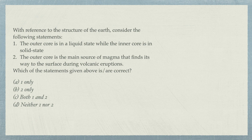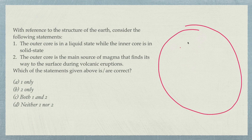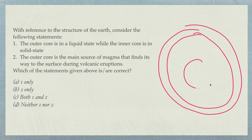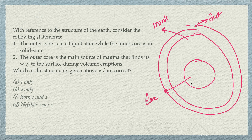Next question: With reference to the structure of the earth, consider the following statement. The outer core is in a liquid state while the inner core is in a solid state. You should know that our earth has a crust, then the mantle, and then the core. The core is divided into two parts: outer core and inner core. The mantle is also divided into two parts: outer mantle and inner mantle.